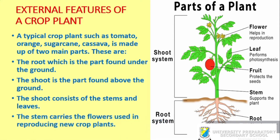The stem carries the flowers used in reproducing new crop plants. There are different ways plants can be used to reproduce new ones. The roots can be used to reproduce new plants, the stem can be used, the seeds inside the fruit can also be used, and in some plants the leaf can also be used to reproduce new plants.